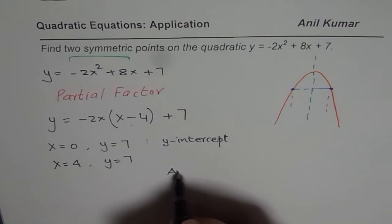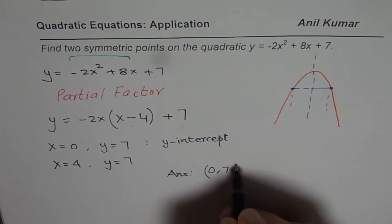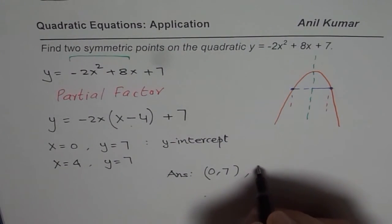The two symmetric points are the y-intercept (0, 7) and (4, 7).